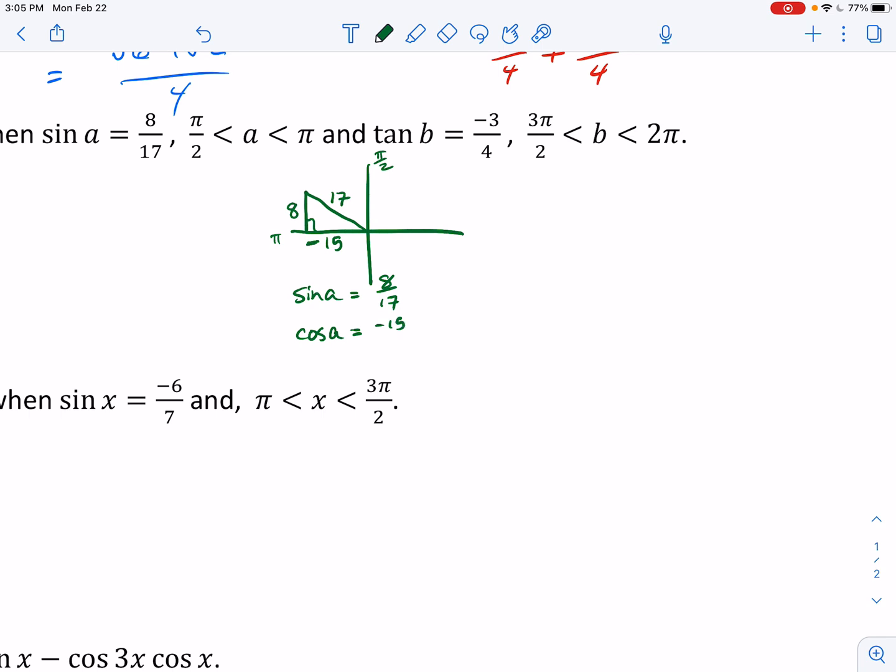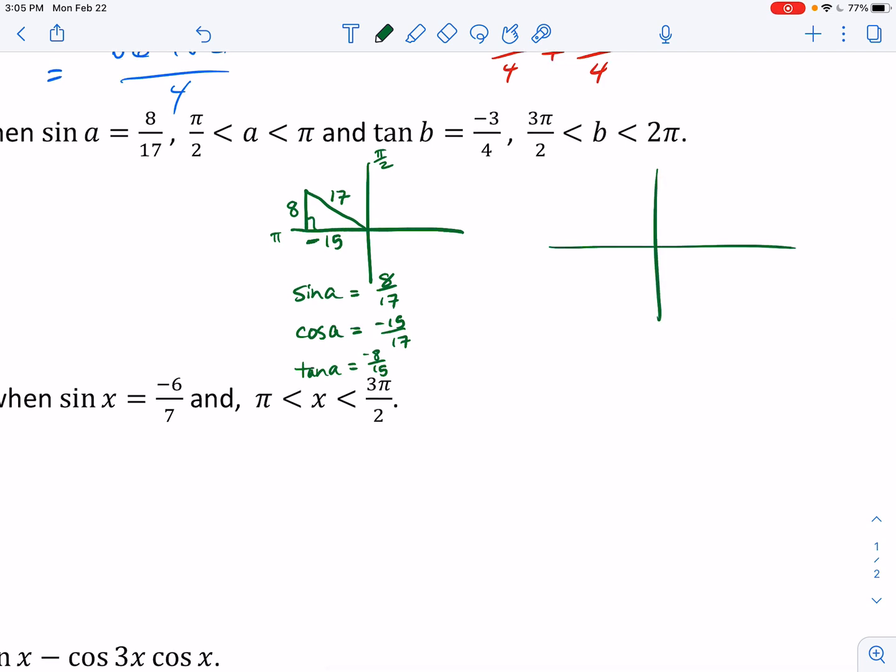then this is negative 15 over 17, and it might be helpful for me to know that tangent of a is equal to, well, it's a negative 8 15ths. Put the negative at the top or the bottom. I'm always afraid I'm going to lose it if I put it at the bottom. Okay, then they said the tangent of b is equal to negative 3 over 4, and now we're in quadrant, well, 3 pi over 2 to 2 pi. We're now in quadrant 4.